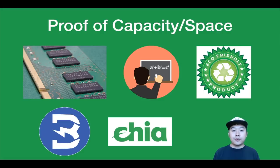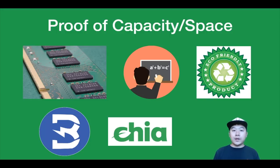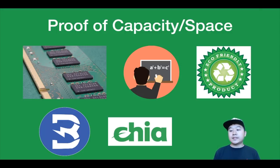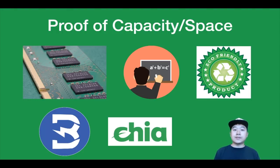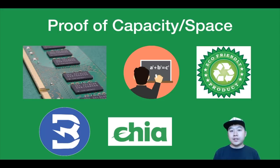Next up is proof of capacity, also called proof of space. The idea is to take proof of work but instead of computation power, you allocate storage or memory to get the ability to add the next block. This is a good approach for anti-spam or denial-of-service attack prevention, and it's definitely a greener approach than the more resource-intensive proof of work. The idea is that you allocate a certain amount of memory or disk space to solve a challenge, and if you're the prover, you send the verifier a piece of data proving you've allocated such space. One implementation is to have people label hard-to-pebble graphs.